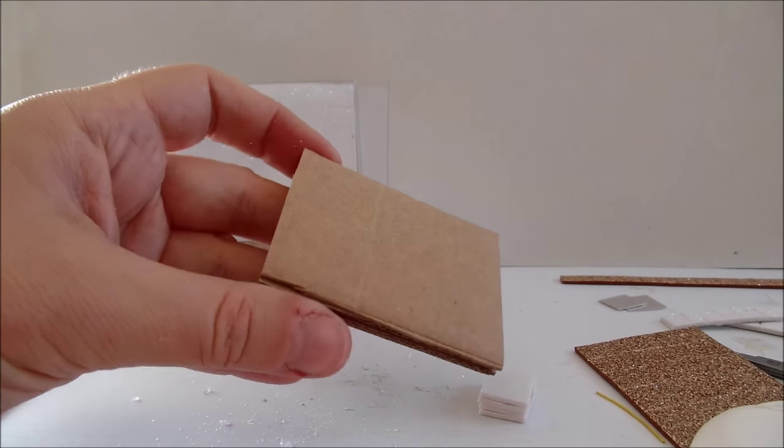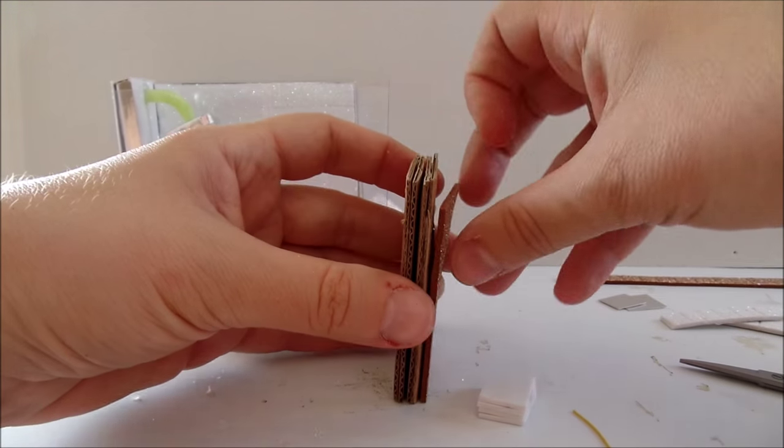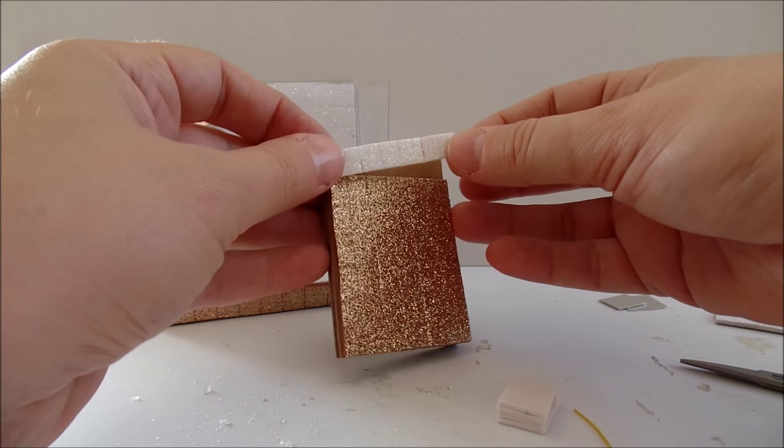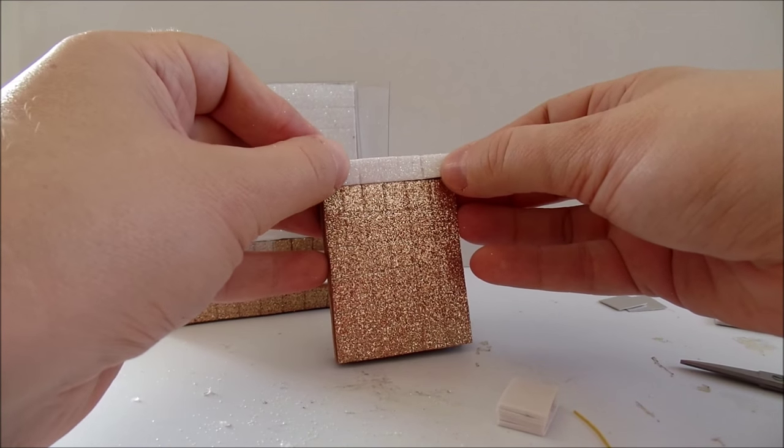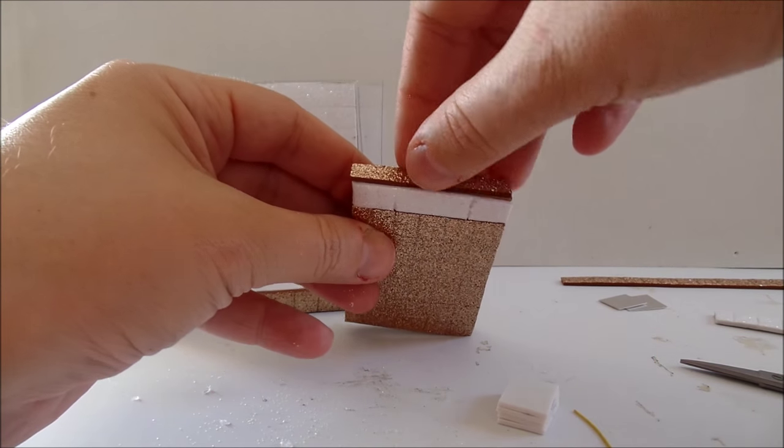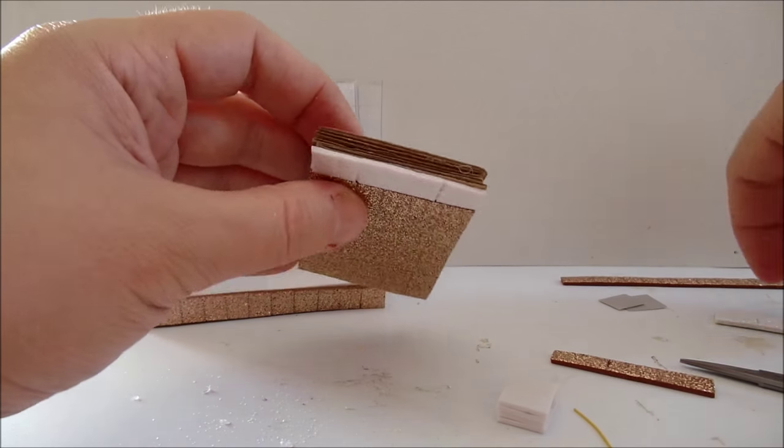I glue the foam paper on the cardboard. I'm gluing a white strip as well because I wanted to match my shower. I'm gluing more foam at the top and on the sides.